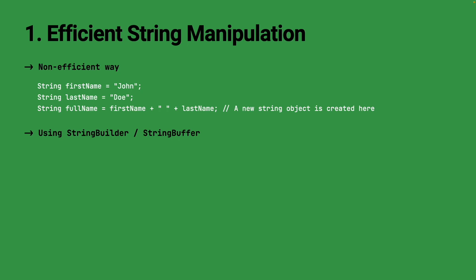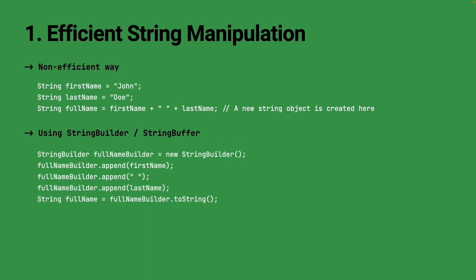To avoid this performance overhead, we can use the StringBuilder or StringBuffer classes. These classes provide a mutable buffer for strings, allowing us to efficiently modify the contents without creating new objects. We use StringBuilder to construct the full name by appending first name, a space, and last name. The append method modifies the buffer directly, avoiding the creation of unnecessary String objects. Finally, we call the toString method to get the complete full name string.